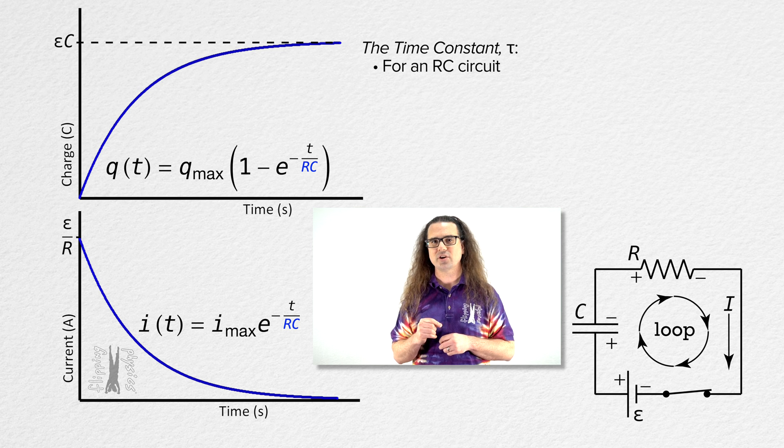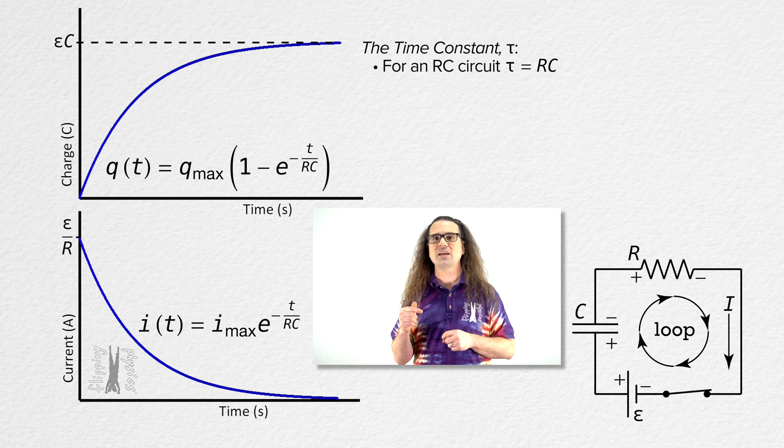The time constant equals whatever variables appear in the denominator of that fraction. In other words, for an RC circuit, the time constant equals resistance times capacitance. The symbol for the time constant is the lowercase Greek letter tau.